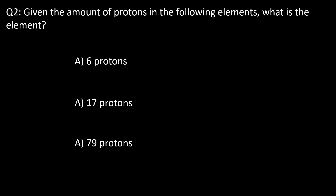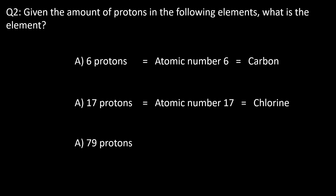Question two: given the number of protons in the following element, what is the element? We have six protons for A, 17 protons for B, and 79 protons for C. The answer is: for A, carbon — the element has six protons, so an atomic number of six. For B, it's chlorine, because chlorine has 17 protons. And for C, it's gold, because gold has 79 protons.